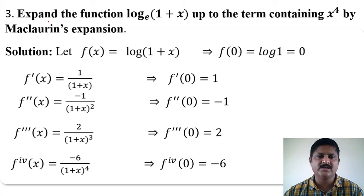The third problem is: expand the function log(1 + x) to the base e up to the term containing x to the power 4 by Maclaurin's expansion. Let f(x) equals log(1 + x), which implies f(0) equals log 1, and the value of log 1 equals 0. Therefore f(0) equals 0. Differentiate this function: f'(x) equals 1 divided by (1 + x). Putting x equals 0, we get 1 divided by 1, which is 1. Therefore f'(0) equals 1.